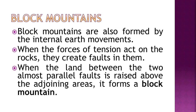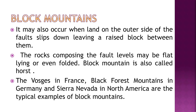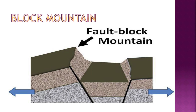The second type is block mountains, which are formed by internal earth movements. When the force of tension acts on rocks, it creates faults. When the land between two almost parallel faults is raised above the adjoining areas, it becomes a block mountain. Block mountains are also called horsts. The Vosges in France, Black Forest mountains in Germany, and Sierra Nevada in North America are typical examples of block mountains.